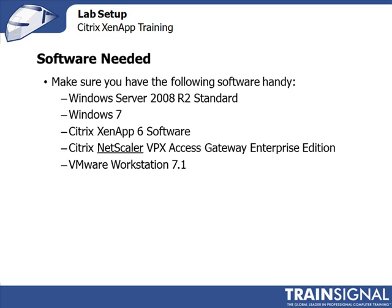The other piece of software you'll need is VMware Workstation 7.1. If you're following along exactly with what I'm doing, this is the Type 2 client hypervisor I'll use to virtualize all the virtual machines for this course. I hope this lesson was informative and gave you enough information to make decisions on how to set up your lab. I'd like to invite you to start the Citrix XenApp 6 training course from TrainSignal.